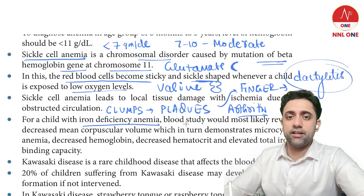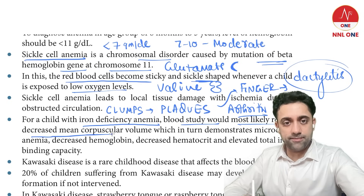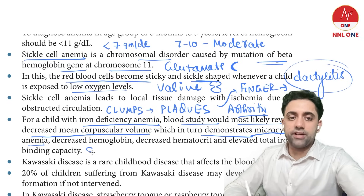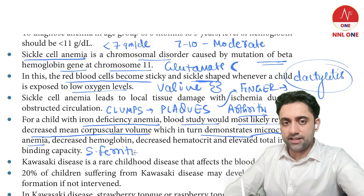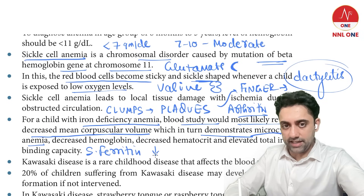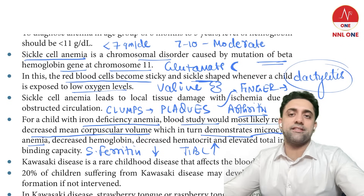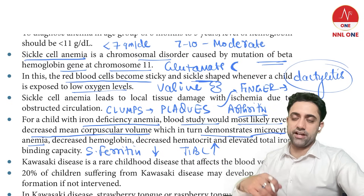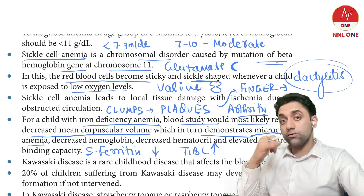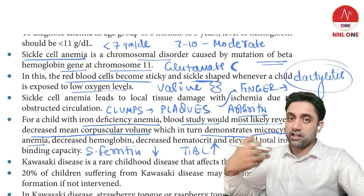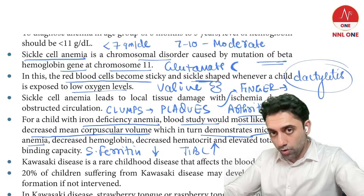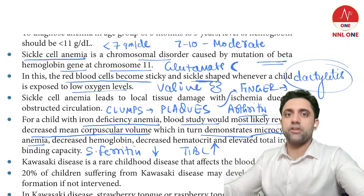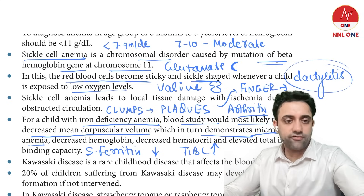In iron deficiency anemia, blood studies reveal decreased MCV, demonstrating microcytic anemia. Serum ferritin decreases, and compensatory total iron binding capacity (TIBC) increases. When serum ferritin is low, it signals the TIBC to increase production, which is how RBC formation is supported.